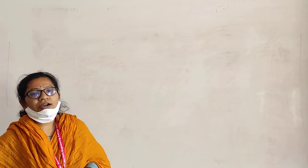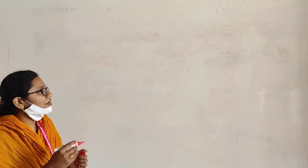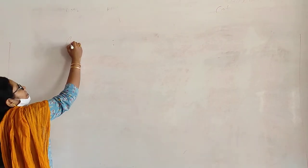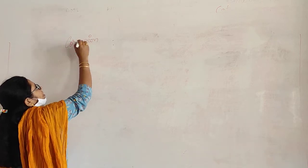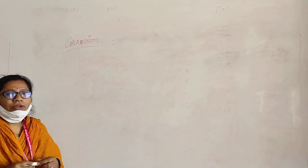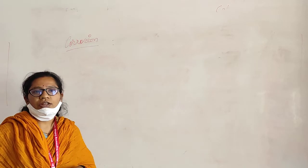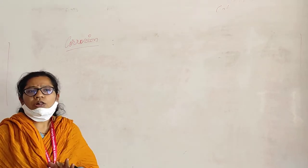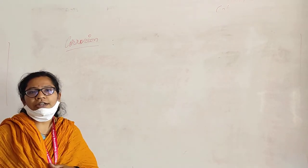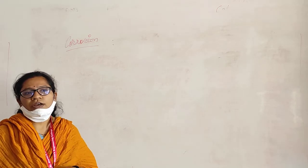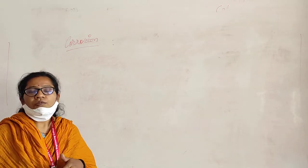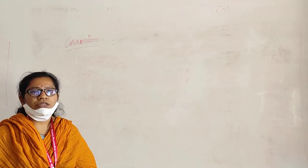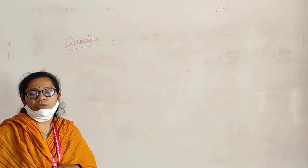Good afternoon. Today we are going to learn about corrosion. Let us see what corrosion is. We have frequently heard the word corrosion and we know that usually iron rusts and gets corroded. What is corrosion and how does it occur? Why is it disadvantageous to us? All this we will be learning now.